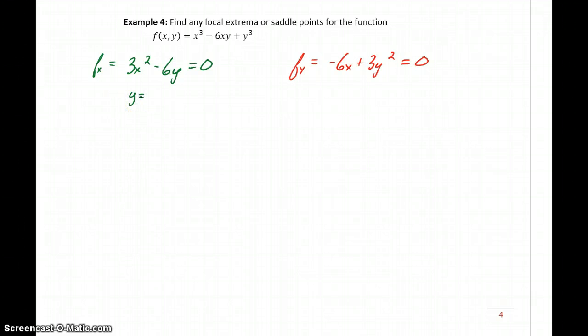There are multiple different ways to start, but what we're going to do is take this equation and solve it for y, which we'll end up getting y equals 1 half x squared by subtracting the 3x squared over and then dividing by negative 6. Then what we can do is take the fact that y equals 1 half x squared and substitute that into our expression for f sub y.